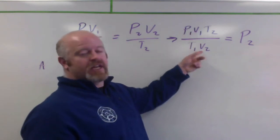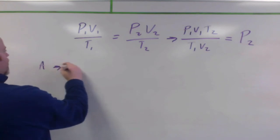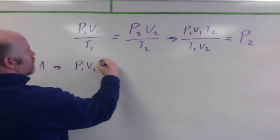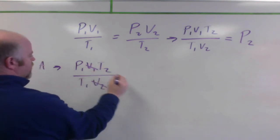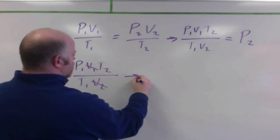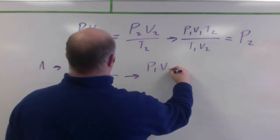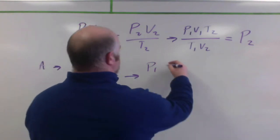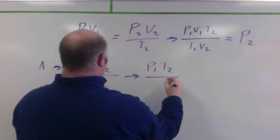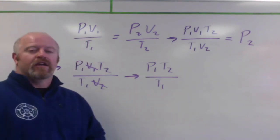So if this V1 and V2 are the same, they mathematically cancel out of our equation. So what we get for can A is these cancel out. So really, we're left with just P1 times T2 over T1, or basically you're looking at Guy Lussac's Law.